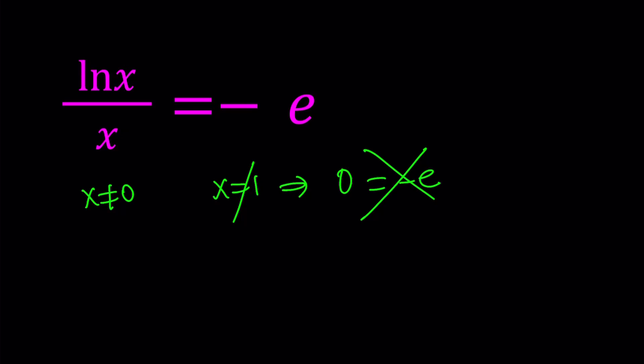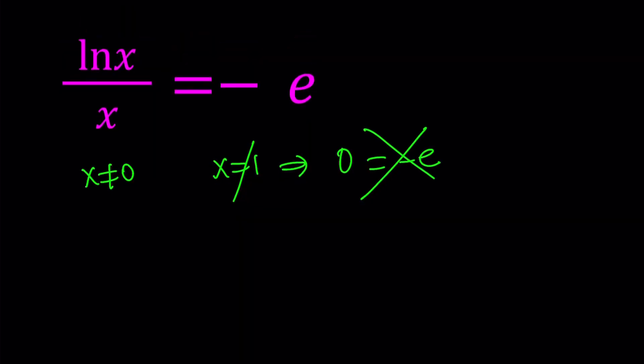You can guess and check, but let's put this expression in a nicer form. Notice that ln x over x equals negative e. E is Euler's number, about 2.7. Negative e is negative 2.7, a negative constant. So ln x over x is negative. What does that tell you?